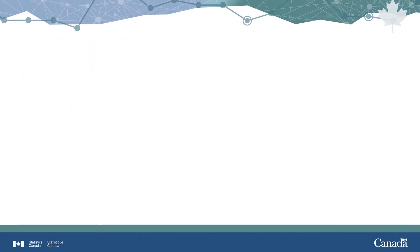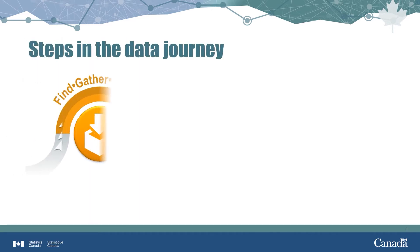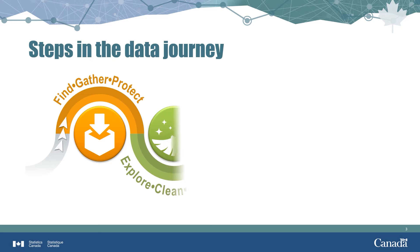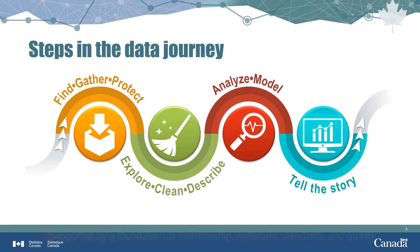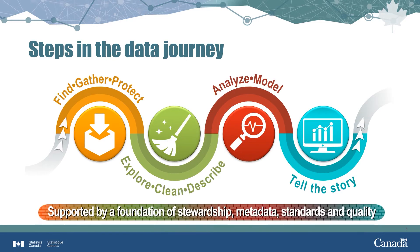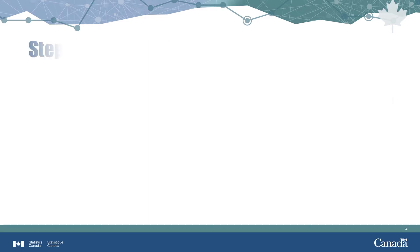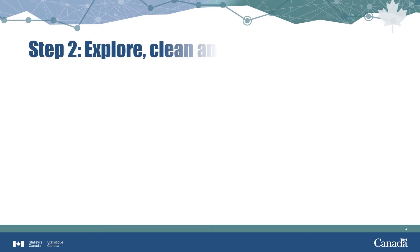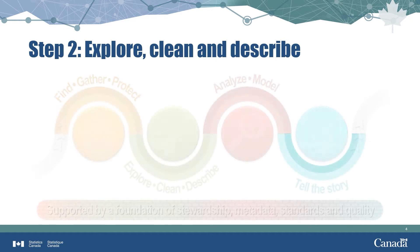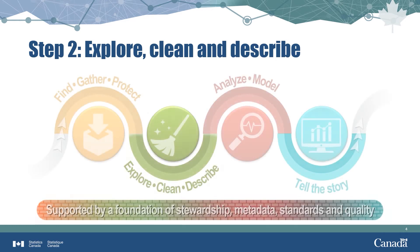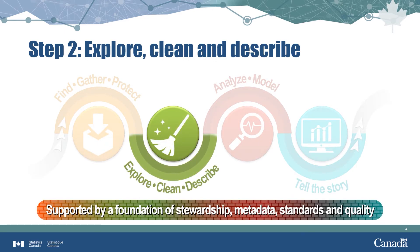This diagram is a visual representation of the data journey — from collecting the data to exploring, cleaning, describing, and understanding the data, to analyzing the data, and lastly, to communicating with others through the story the data tell. The use of proportions, ratios, and rates are part of the explore, clean, and describe step, and are also used to analyze and model.